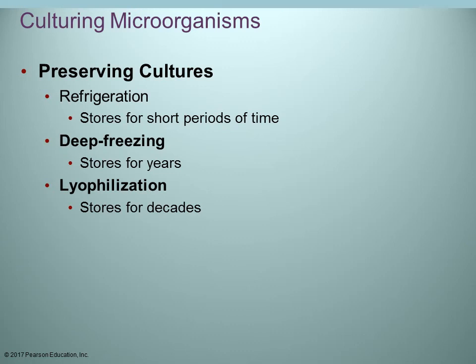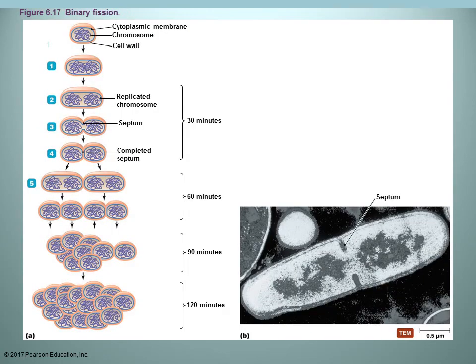Lyophilization prevents water crystals from forming that could potentially rupture the cytoplasmic membrane and cell walls. Binary fission is the way prokaryotic cells grow — they do not carry out mitosis. The DNA must replicate before cell reproduction because you're going from one cell to two cells, each needing its own copy of DNA. As the DNA replicates, the cell elongates; once replication is complete, a septum forms — the cell pinches in the middle until the cell wall is complete and you have two new daughter cells.